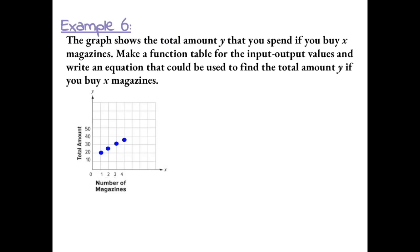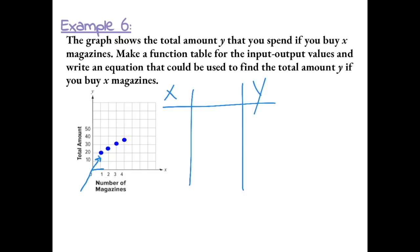Example 6. The graph shows the total amount y that you spend if you buy x magazines. Make a function table and write an equation to find the total amount y if you buy x magazines. Our first ordered pair is (1, 20), the next is (2, 25), then (3, 30), and the last ordered pair is (4, 35).